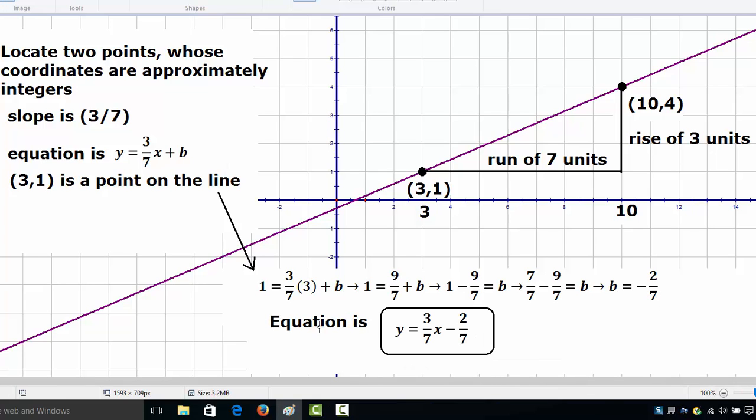So therefore the equation of this given line is y equals 3 over 7 times x minus 2 over 7 in slope-intercept form.